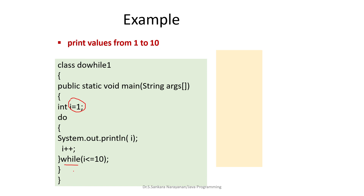The output of this program prints values from 1 to 10: one, two, three, four, five, six, seven, eight, nine, ten. Once i reaches 11, the condition 11 <= 10 is false, so it exits the body of the loop. Thank you.